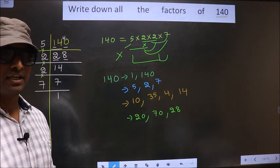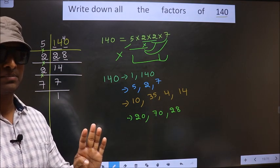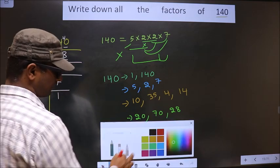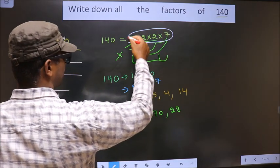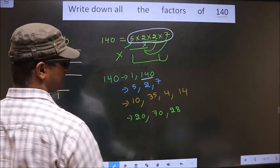Next, you take combination of 4 numbers. Here, you have only 4 numbers. If you take all the 4 numbers, you get 140 itself.